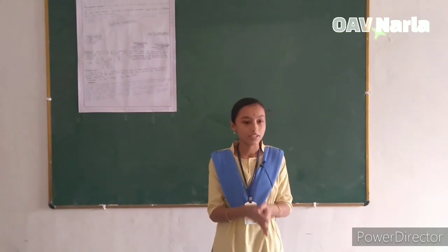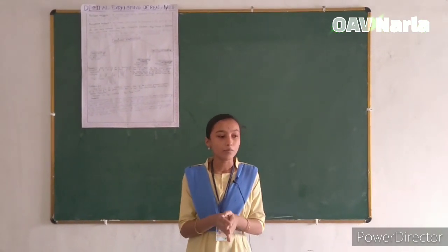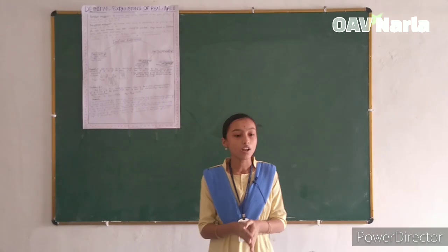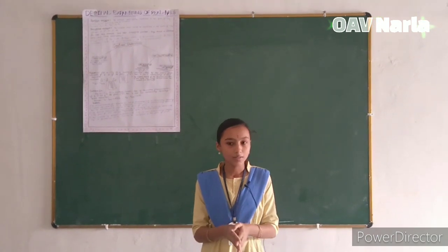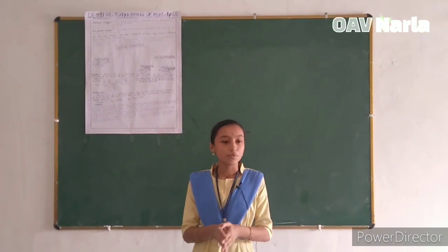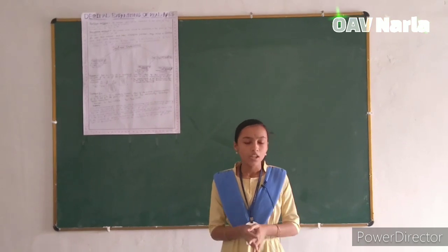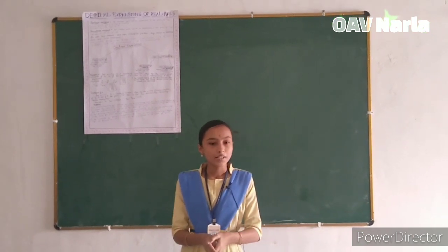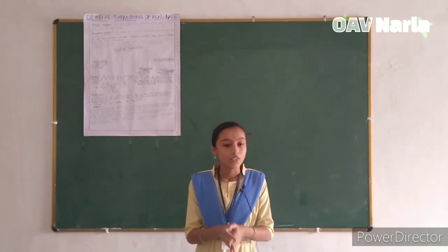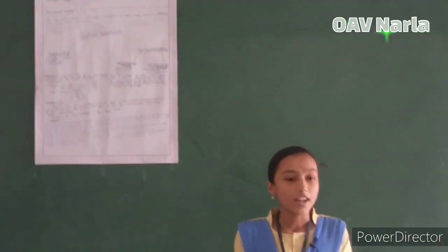The numbers which cannot be expressed in the form of p by q are known as irrational numbers, such as root 2, root 3, root 5, root 7, pi, etc. So when these numbers have been simplified further, they result in decimals. Let us learn how to expand these decimals here.